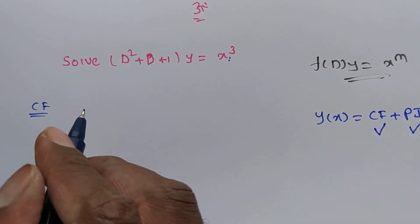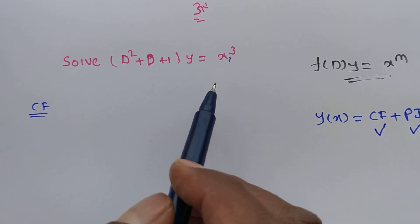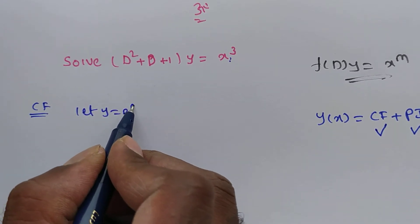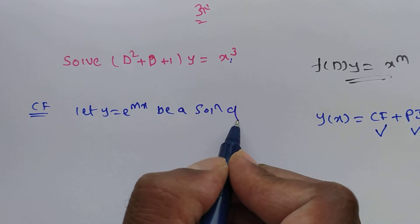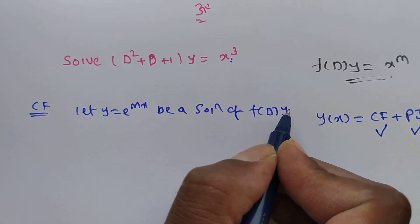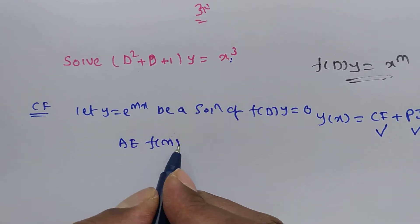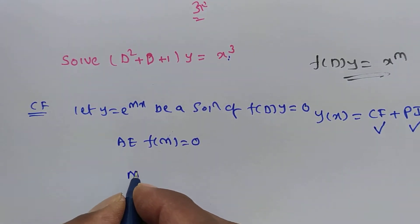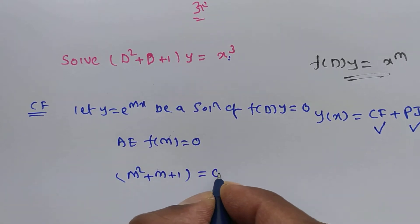To find the complementary function we have to consider Q(x) as 0. Let y = eᵐˣ be a solution of f(D)·y = 0. Then the auxiliary equation is f(m) = 0. In place of D we write m, and we get m² + m + 1 = 0.